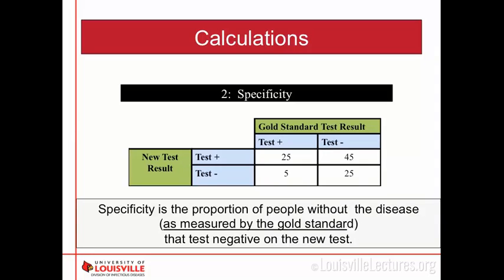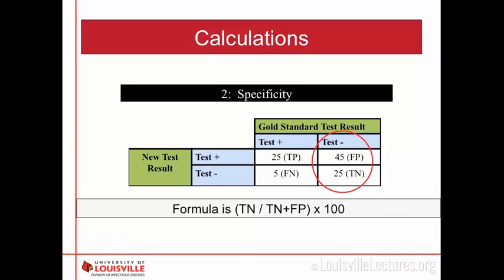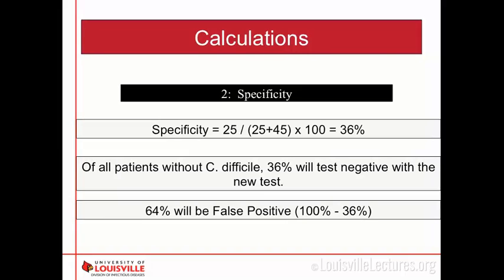Specificity is the proportion of people without the disease, measured by the gold standard test, that test negative on the new test. The formula is true negatives over true negatives plus false positives, times 100. Plugging in the numbers, we get a specificity of 36%. A specificity of 36% means that 36% of patients without C. diff test negative on the new test, so 64% of them will be false positives.